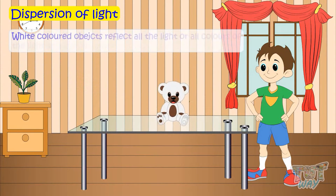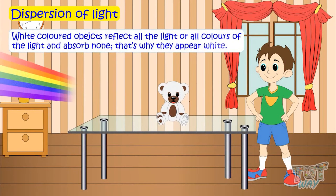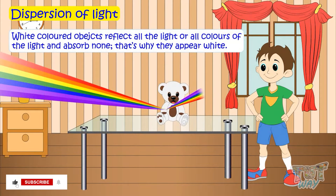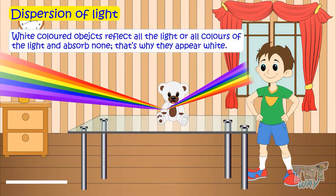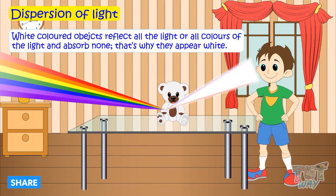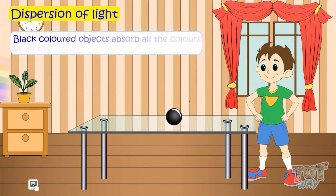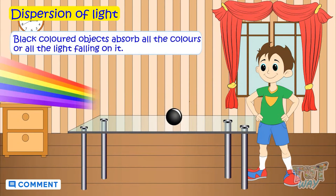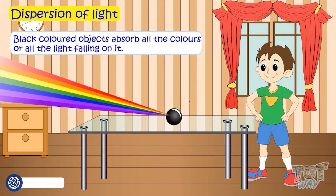White color objects reflect all the light, or all colors of the light, and absorb none — that's why they appear white. Black color objects absorb all light, or all colors of the light, and reflect none, and so appear black.